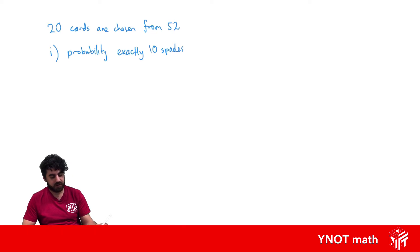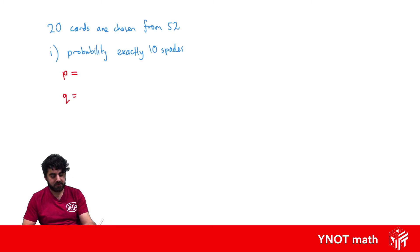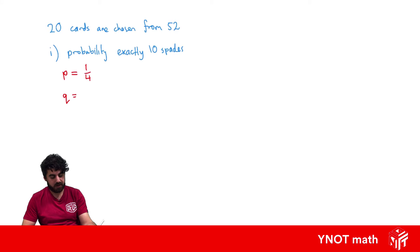So the first thing we need to do is list our probabilities for P and Q. P is the probability of success — drawing a spade — which is 1 in 4, or 1/4. That means the probability of not drawing a spade, Q, is 3/4.